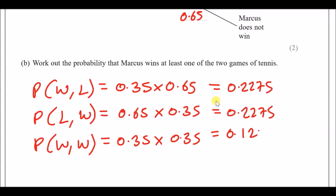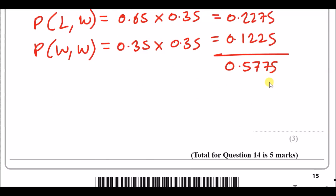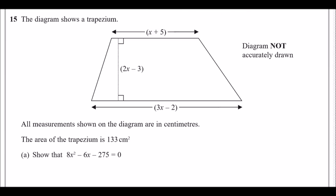Any of these three options can happen so we add them up: 0.1225 plus 0.2275 times two. The total probability of Marcus winning at least one game is 0.5775.